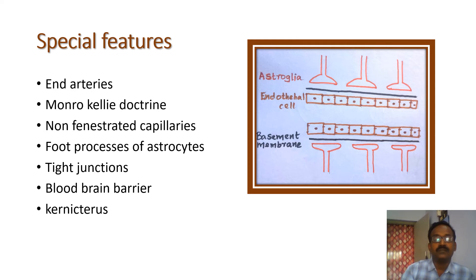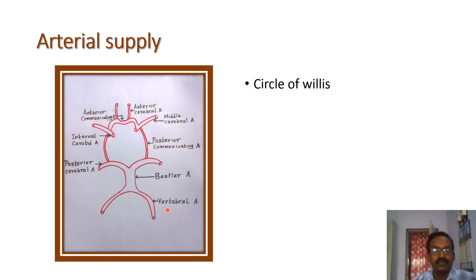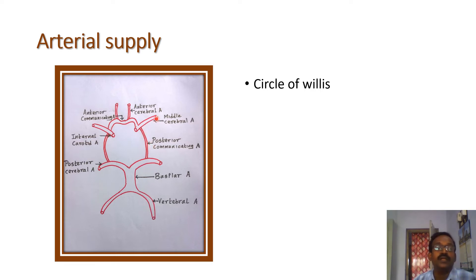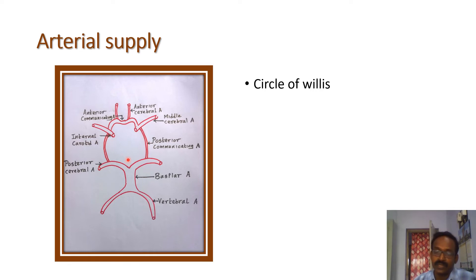Kernicterus is produced due to defective blood-brain barrier and deposition of bilirubin in the basal ganglia. The cerebral circulation is formed by the vertebrobasilar system and the internal carotid artery. Two vertebral arteries form the basilar artery, which gives rise to the posterior cerebral artery. The internal carotid artery gives the posterior communicating artery, middle cerebral artery, anterior cerebral artery, and anterior communicating artery. Functionally, the cerebral vessels are end vessels, so blockage of each vessel affects a particular area of the brain.